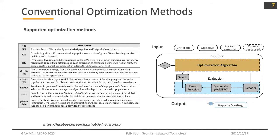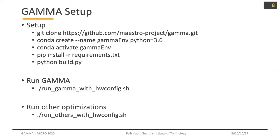In this repo, we also provide some conventional optimization methods, which are supported by the NeverGrad package. The only difference is that we keep the algorithm loop but replace the evolution part of Gamma with some optimization method. It could be random search, a standardized algorithm, differential evolution, and so on.